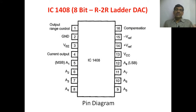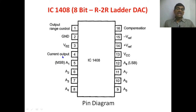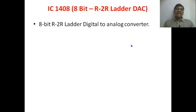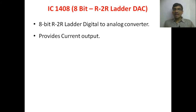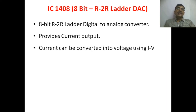IC 1408 is an 8-bit digital to analog converter. Inside the IC we have an R2R ladder DAC. The output of the DAC is current, not voltage, and we have to convert this output current into voltage by using a current-to-voltage converter. The IC 1408 is an 8-bit R2R ladder DAC which provides a current output, and this current can be converted into voltage using an I-to-V converter.